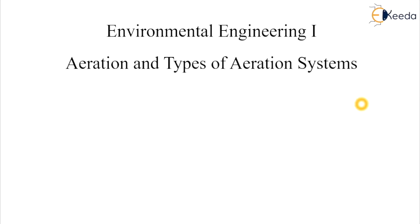As we have seen in the previous lecture, aeration is one of the primary treatments in the water treatment flow chart. Aeration is the transfer of gas or removing the objectionable gases from the water. We are providing aeration basically for the transfer of gases and oxidizing the impurities present in water. Let's see the mechanism and different types of aeration systems.